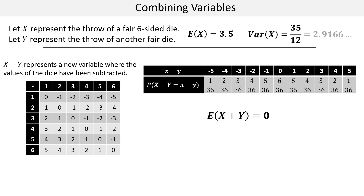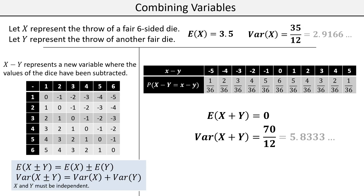That wouldn't make sense. If we process this the usual way — finding E(X²) and subtracting E(X)² — we actually get a variance of 70 over 12, the same as when we were adding. The main point to take away is that whether we're adding or subtracting, the variance is always increasing. In general: E(X±Y) = E(X) ± E(Y), but for the variance, whether adding or subtracting, we always add the individual variances.